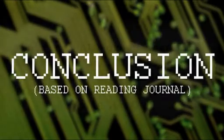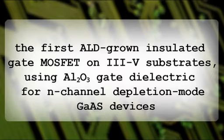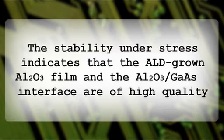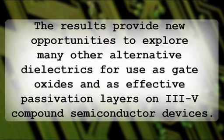The conclusion: This is the first ALD-grown insulated gate MOSFET on 3-5 substrates using aluminium oxide gate dielectric for n-channel depletion mode gallium arsenide devices. The stability under stress indicates that the ALD-grown aluminium oxide film and the aluminium oxide/gallium arsenide interface are of high quality. The results provide new opportunities to explore many other alternative dielectrics for use as gate oxides and as effective passivation layers on 3-5 compound semiconductor devices.